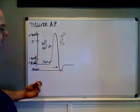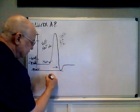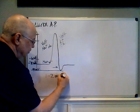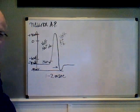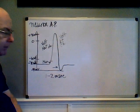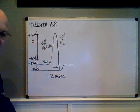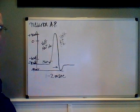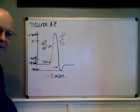This whole neuron action potential lasts between one and two milliseconds — a thousandth of a second. It's rapid. Neurons fire action potentials very rapidly. The cardiocyte action potential doesn't look anything like this, and there's a reason — we'll talk about that in a moment.